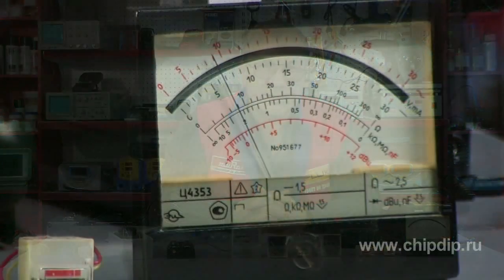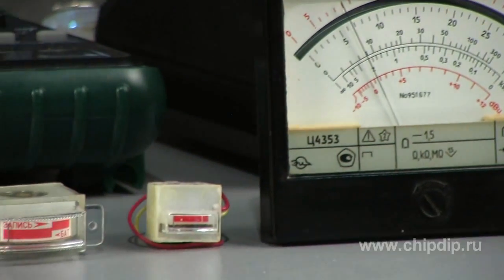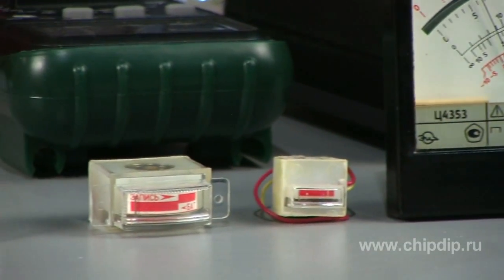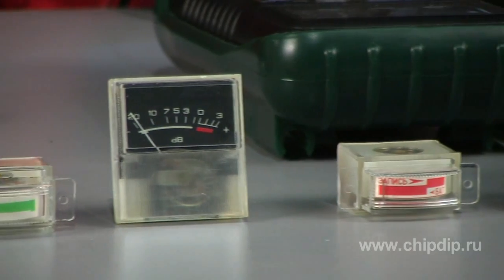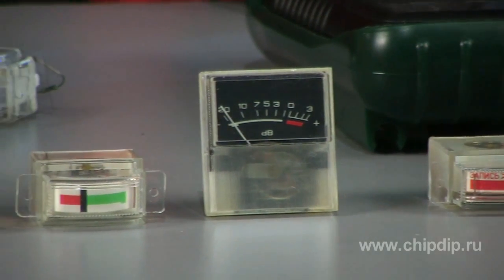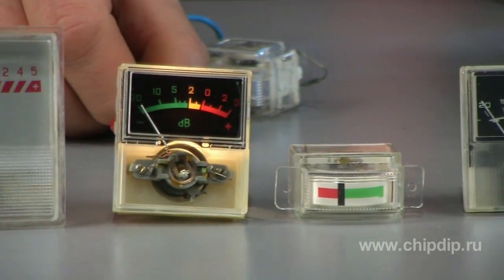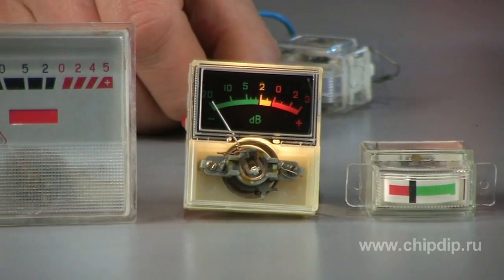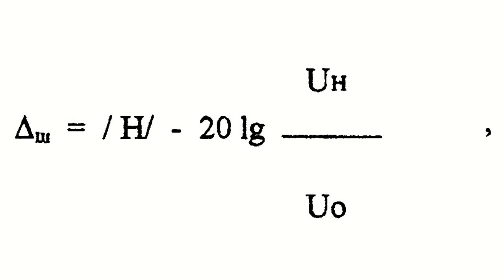Precise measurement instrumentation is calibrated individually. Less precise instrumentation is provided with a previously printed type scale or standard graduation table. Sometimes the use of typical scales or standard calibrated tables requires the adjustment of the measurement instrumentation to bring its errors to an established norm.